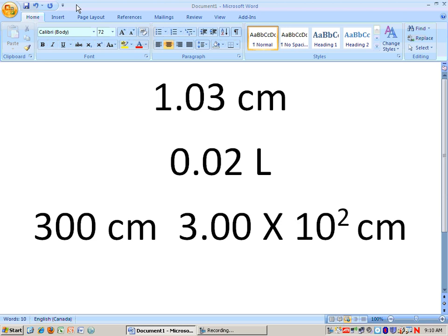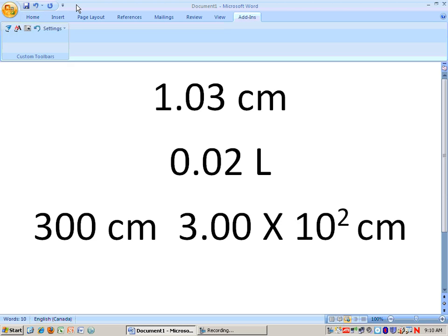The greater the number of sig figs, the greater the uncertainty of the measurement. In other words, the more sig figs you have, the better the instrument you used was.